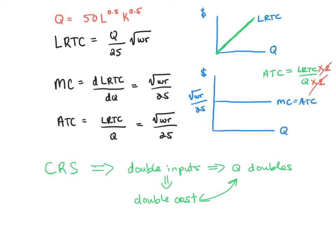What I want you to see is that there's a connection between production and cost. Here, when production exhibits constant returns to scale, total cost increases with output at a constant rate.